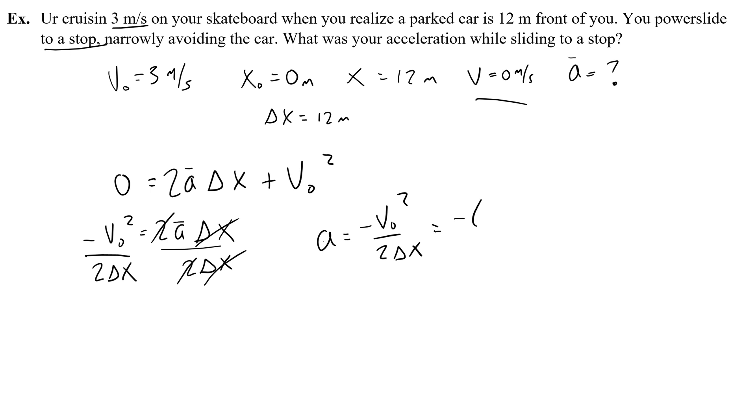Negative 3 meters per second, the whole thing squared. That's still going to be negative, because it's the 3 that's being squared without the negative inside of it. Then I divide by 2 times 12 meters. This gives me negative 9 meters squared per second squared over 24 meters. That meter's going to cancel out of meters squared. And I get 0.375 meters per second squared. Now, the negative is good, because my initial velocity was positive. And in order for me to be slowing down, the acceleration has to be in the opposite direction. Let's do one more.